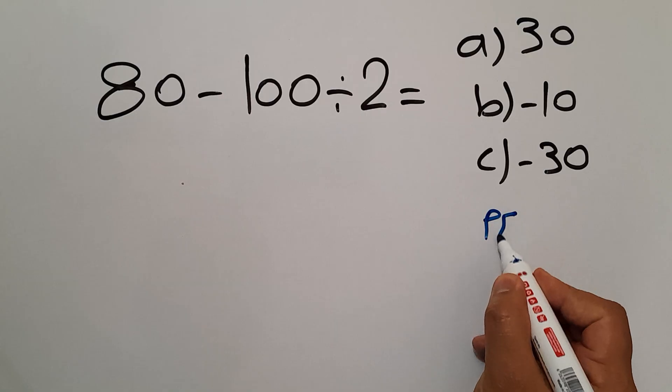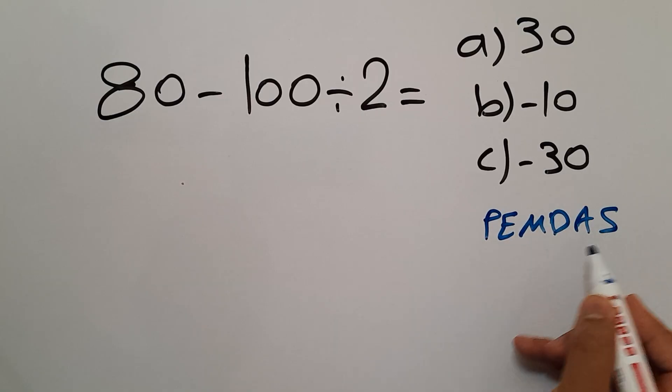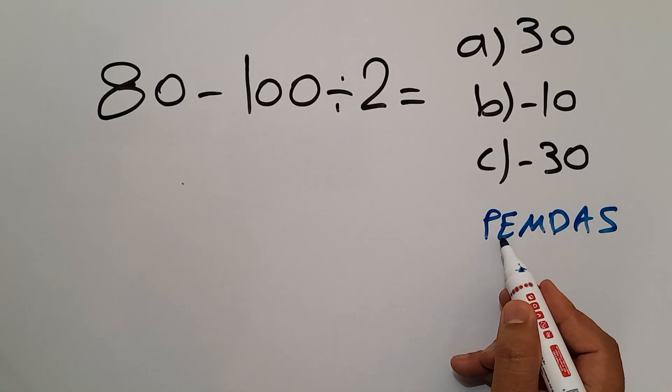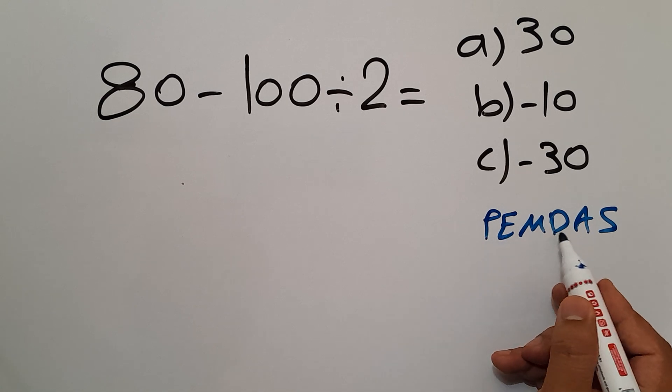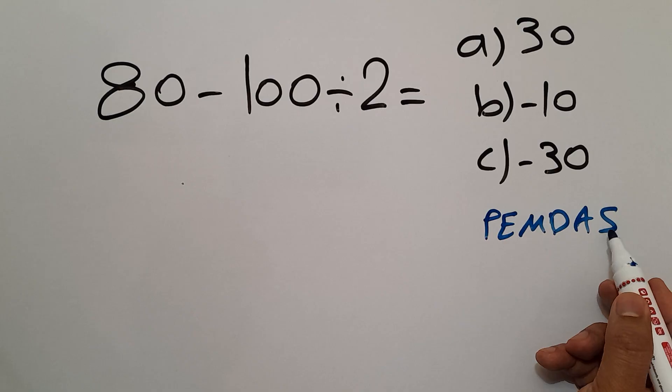P stands for parentheses, E stands for exponents, M and D stands for multiplication and division, and A and S stands for addition and subtraction.